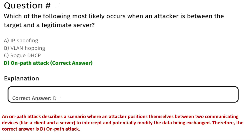An on-path attack describes the scenario where an attacker positions themselves between two communicating devices, like a client and a server, to intercept and potentially modify the data being exchanged. Therefore, the correct answer is D, on-path attack.